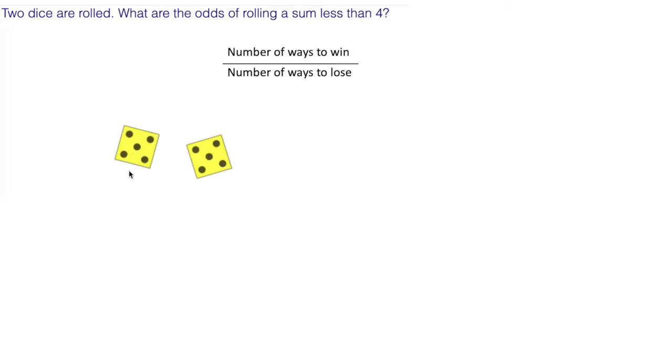We have two dice. You have six outcomes for the first die times six outcomes for the second die. Six times six, or six to the power of two, which is 36. There are 36 ways of rolling the dice. So we're talking about the odds of rolling a sum less than four.